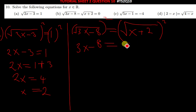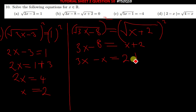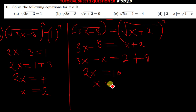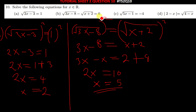After squaring, the right side remains x plus 2. We pair like terms: 3x minus x on the left gives 2x, and 2 plus 8 on the right gives 10. So 2x equals 10, meaning x equals 5. Testing: 15 minus 8 is 7, and 5 plus 2 is also 7, so the square root of 7 minus the square root of 7 equals zero. Our solution is correct. Let's move on.